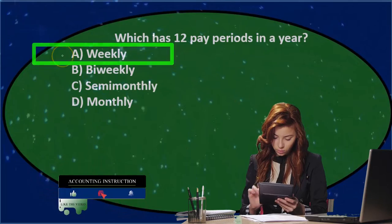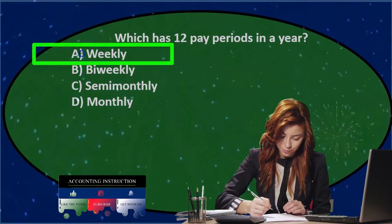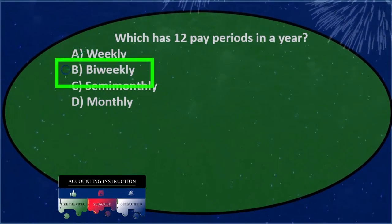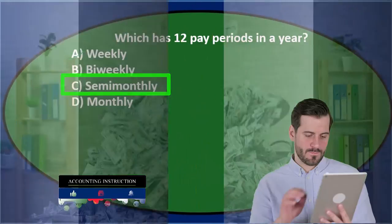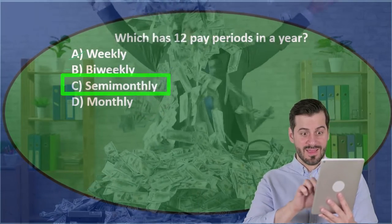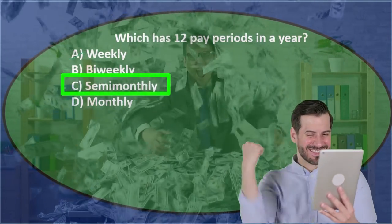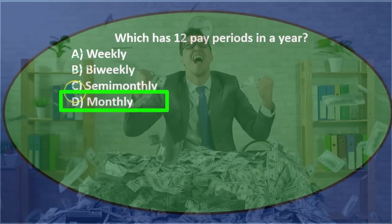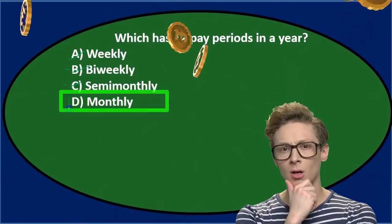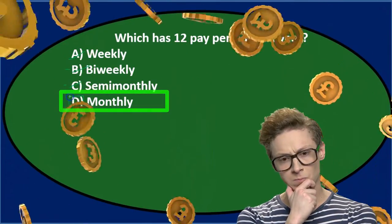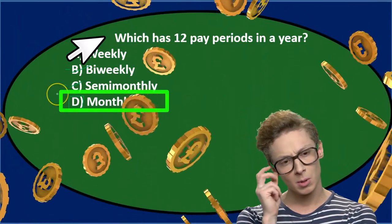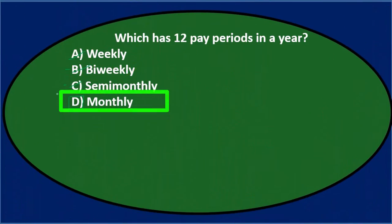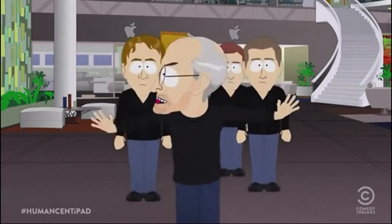Would it be weekly? There are 52 weeks in a year, so that doesn't sound right. Bi-weekly — even if we don't fully understand bi-weekly or semi-monthly, there are more than 12 of those pay periods, whether we pay every other week or twice a month. So 12 seems very low for those. Monthly is clearly the answer, because there are 12 months in a year. If we pay monthly, there would be 12 pay periods. Therefore, the correct answer is D) monthly.